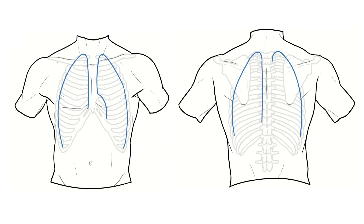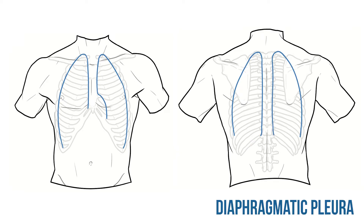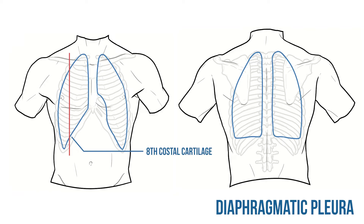Posteriorly both membranes continue down to the level of the 12th rib. Finally, diaphragmatic pleura lines the inferior border of the cavities. Posteriorly this pleura is almost horizontal, passing between the 12th rib medially and the 10th rib laterally. Anteriorly this pleura follows the angle of the costal margin, and should ideally intersect with the midclavicular line at the level of the 8th costal cartilage.